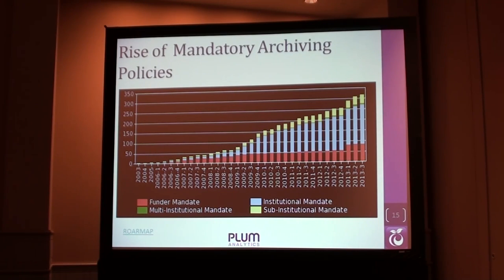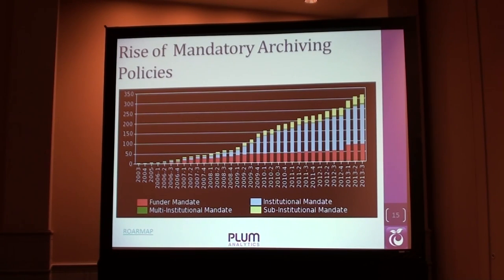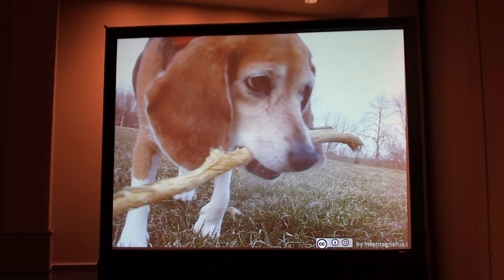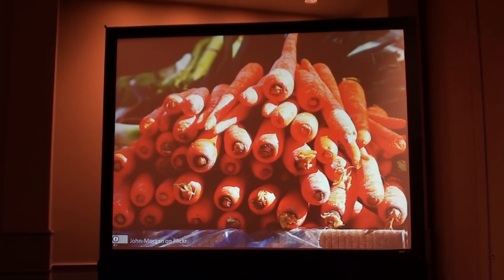As librarians, we've been helping the open access movement by saying the institutional repository is here — we want all your research to be in there. A lot of institutions have implemented mandatory archiving policies, and those have grown over the years. To some degree they're successful, but they're hard to implement. For researchers, it's another thing somebody's making them do — they want to do their research. It's good for society, but it's another thing on the administrative plate. So it's a stick — but it'd be better if we had carrots.